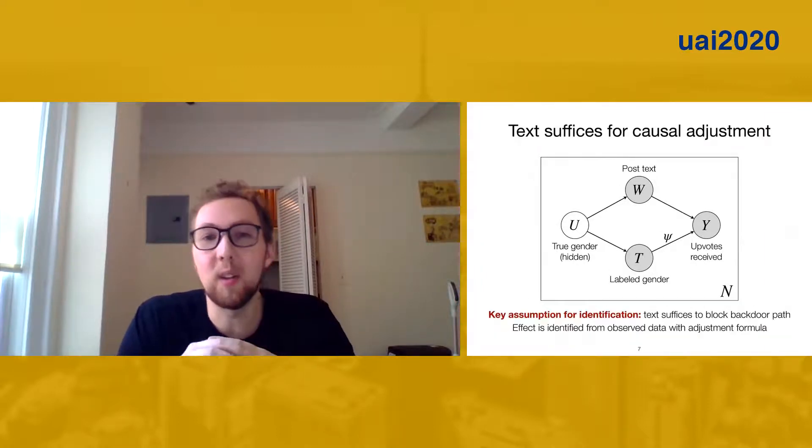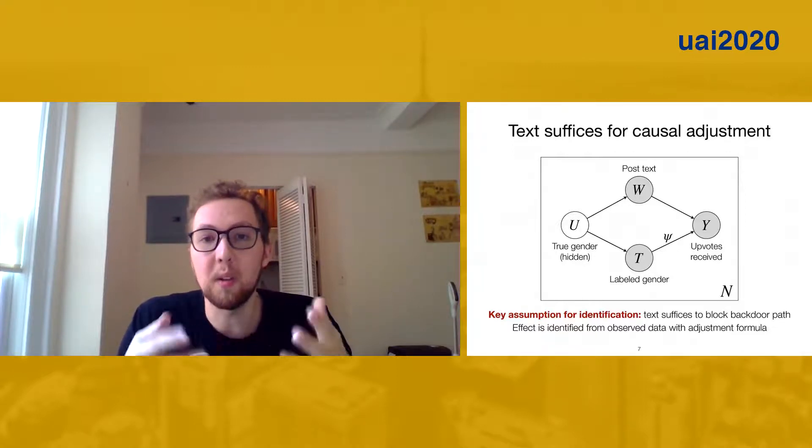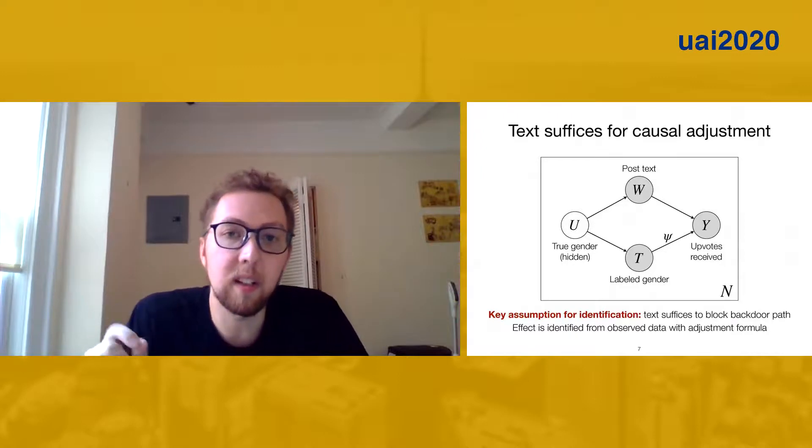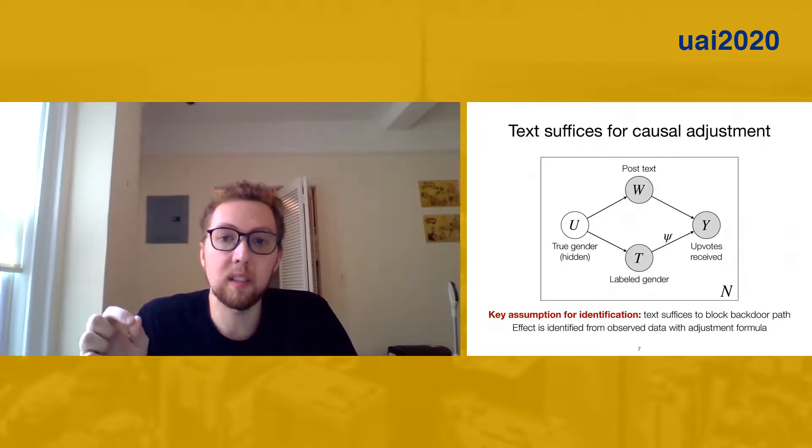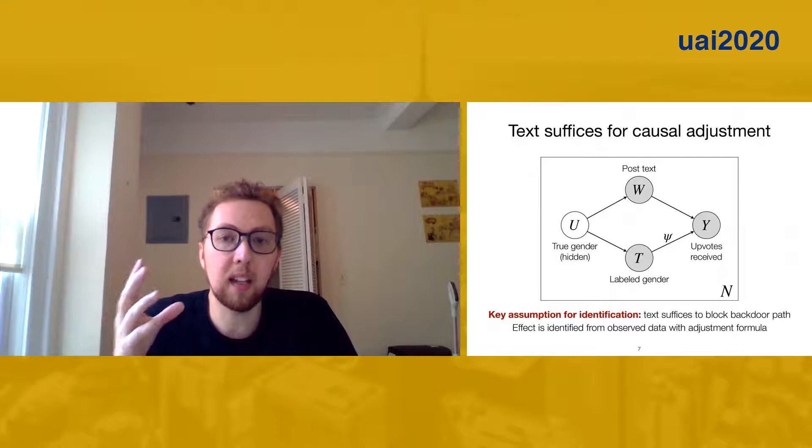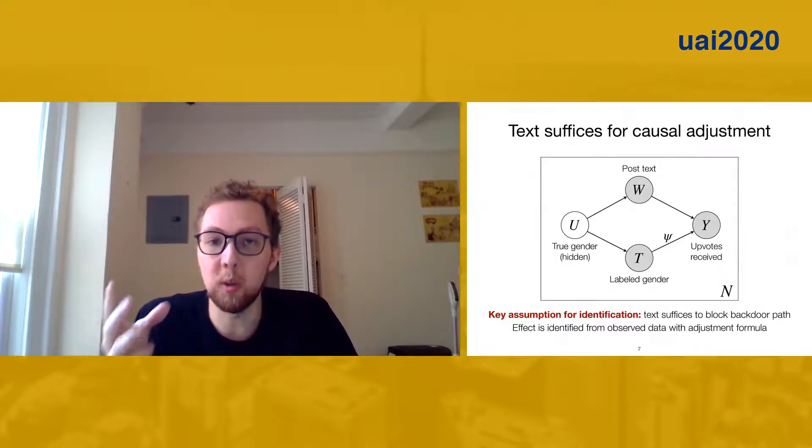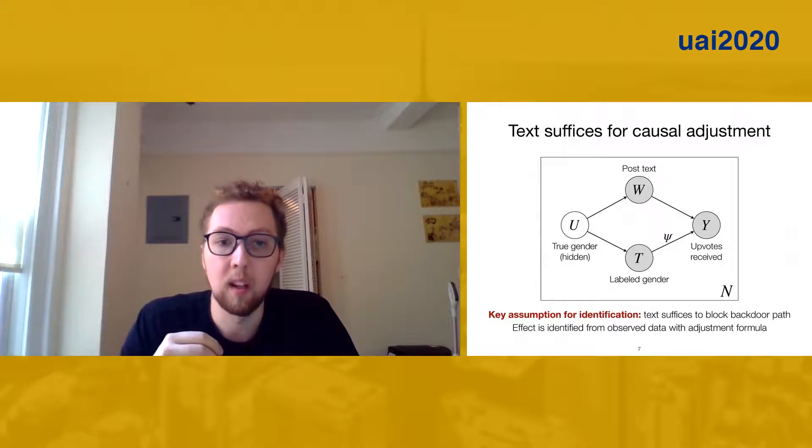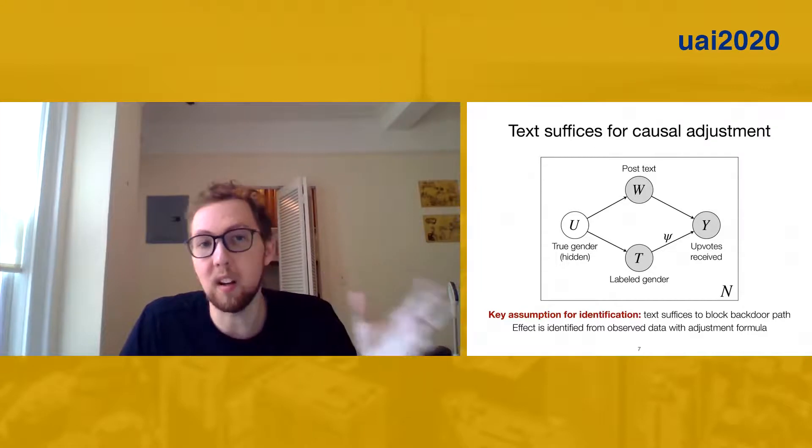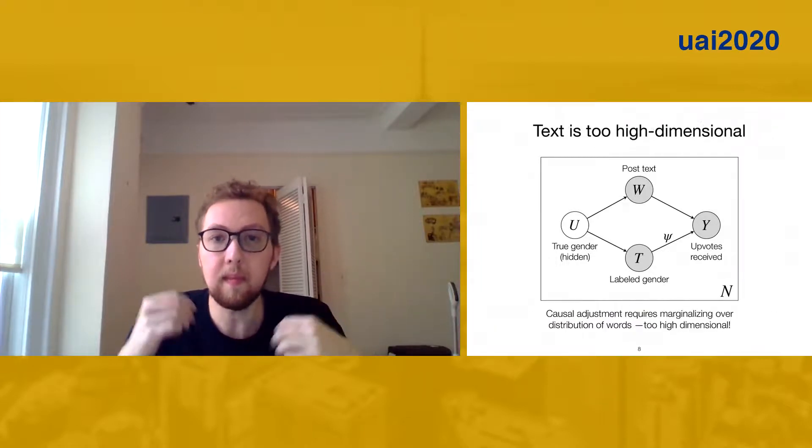Of course, in general, you can't get causal effects from observational data without assuming a little bit more. But it turns out that the extra thing that we need to assume is already baked into this graphical model. The key assumption here is that any common causes of the outcome and the gender label pass through the text of the post itself. We're going to assume that the observed words carry enough information in principle to account for all common causes of the treatment and the outcome. And if that's true, then at least in principle, it's possible to identify the causal effect from the observational data.